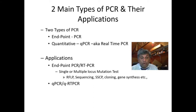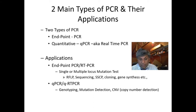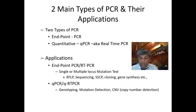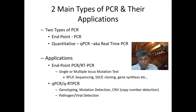The more clinically oriented type is quantitative PCR, also known as real-time PCR or qPCR. For quantitative PCR or RT-PCR, you can use it for genotyping, mutation detection, copy number variation, and also for pathogen detection — especially in viral detection, like for coronavirus.